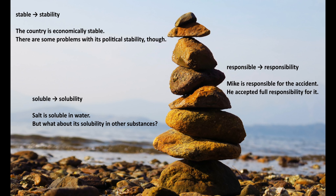Now, if the adjective ends in "-able", "-ible", or "-uble", we change the endings to "-ability", "-ibility", and "-ubility", respectively. Have a look. Here, "-able" is turned into "-ability". Like, for example, in this pair.